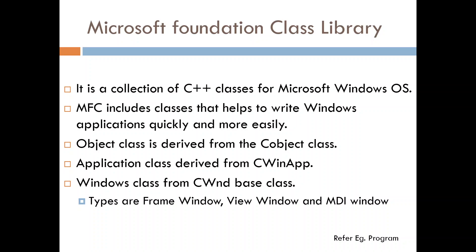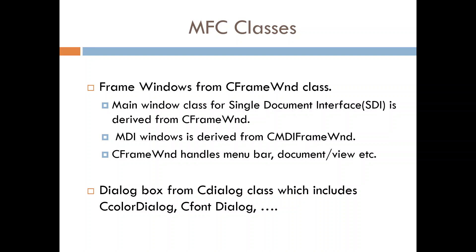The base class for creating windows is called CWnd. From CWnd you derive various different types of windows. For example, to derive a frame window the base class is CWnd and the derived class is CFrameWnd. Using CFrameWnd you can create a Single Document Interface. To create a Multiple Document Interface, you use the CMDIFrameWnd class, which is also derived from CWnd.